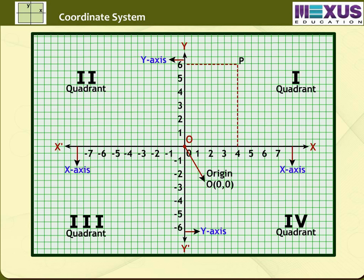To mark a point, write the X-coordinate or the number on the horizontal axis first and then the Y-coordinate or the number on the vertical axis. The first number of the pair is called the X-coordinate or abscissa. The second number of the pair is called the Y-coordinate or ordinate.